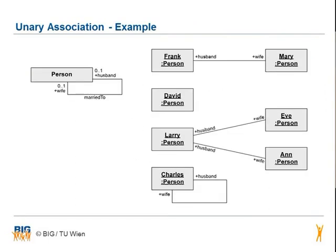Unary association is used to model a relationship from and to the same class. Person A is married to another person B and person B is married to person A. Frank is married to Mary. David has no married-to relationship, which is also valid because the multiplicities in the class diagram show a minimum of 0 on both sides.